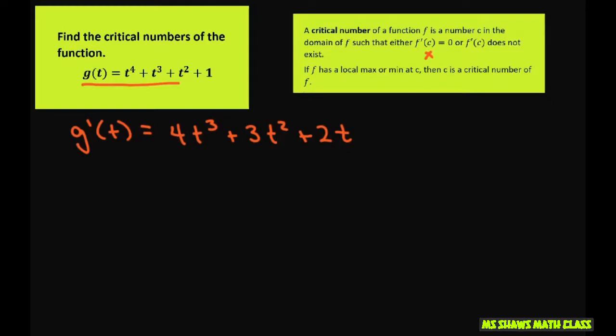According to our steps, we're going to set g prime of t equals zero. I'm going to factor out a t, and that gives you t times 4t squared plus 3t plus 2.